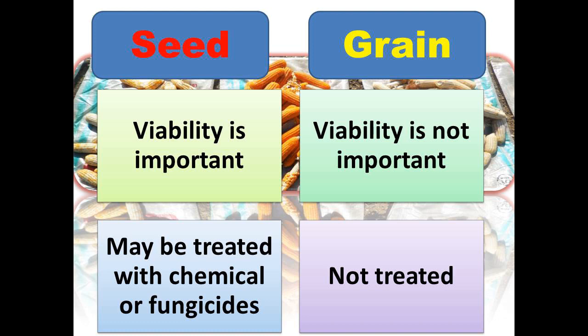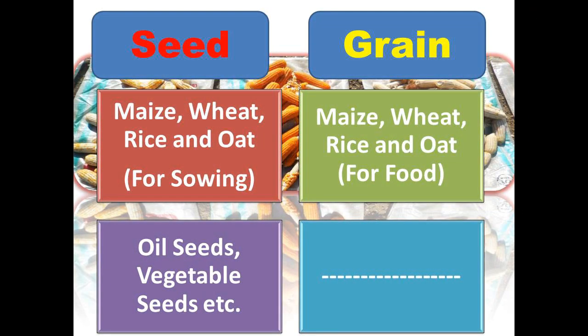When we talk about examples, we can say maize, wheat, rice, or oat — a karyopsis fruit — as a seed when we have to use it for sowing purposes. And we can say maize, wheat, rice, or oat — a karyopsis fruit — as a grain when we have to use it for food purposes. Another example: oil seed crops have seeds, vegetable crops produce seeds, but these types we do not call grain.